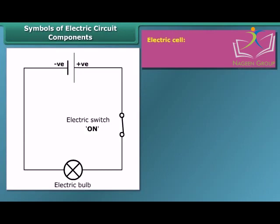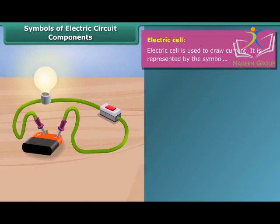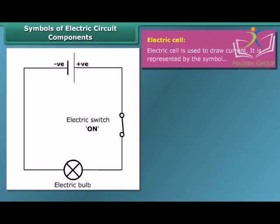An electric cell is a simple device which is used to generate electricity. Electricity is produced by chemical reaction. It has a positive terminal and a negative terminal. In the symbol of the electric cell, the longer line represents the positive terminal, and the thicker, shorter line represents the negative terminal.